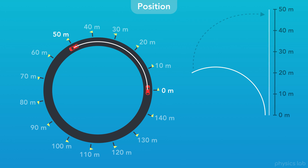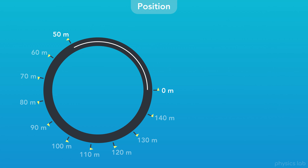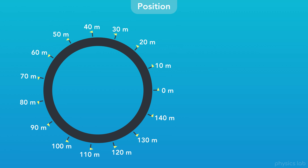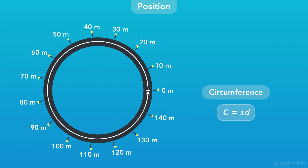If we took that arc and straightened it out, as if it were a string, its straight length would still be 50 meters. We could also imagine wrapping a tape measure around the road to place each flag. The road is a circle, and the circumference c is pi times the diameter, or 2 times pi times the radius. If the diameter d is 48 meters, then the circumference is 150.8 meters — that's the total length of the path around the circular road.